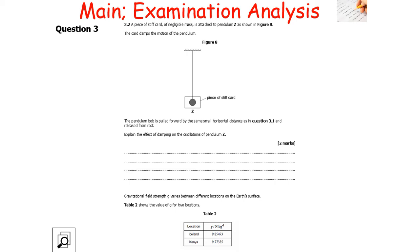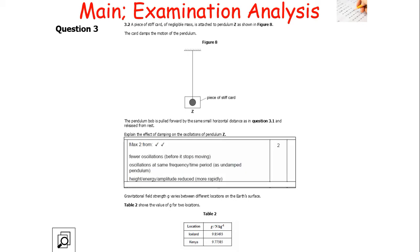A piece of stiff card of negligible mass is attached to pendulum Z. The card dampens the motion of the pendulum. The pendulum bob is pulled forward by the same small horizontal distance and released from rest. Damping will dissipate energy to the surroundings, so there will be fewer oscillations. Because it is light damping, the oscillations will have the same frequency and time period, but the amplitude will reduce quite rapidly.